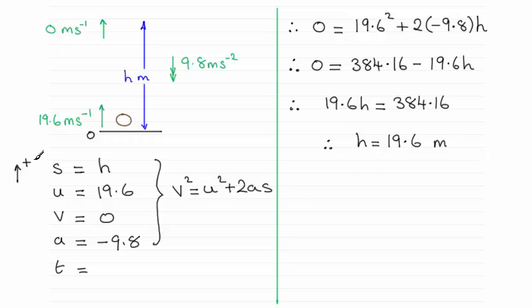Now if you did set the plus direction downwards, no problem. But do bear in mind that h would now be negative. s would be negative h, I should say. U would be minus 19.6. V would still be zero. But a would be positive 9.8. And again, if you put those values into this equation here, it will still turn out to be h equals 19.6.